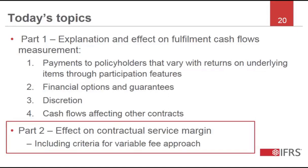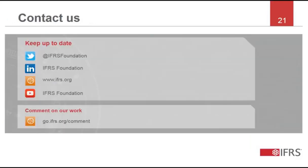That's the end of part one of this webcast on measuring insurance contracts with participation and other features. We have provided a basic overview of the four features and discussed the effect of those features on the measurement of the fulfilment cash flows. In part two, we'll discuss the effect of those features on the contractual service margin. Thank you for listening to part one.